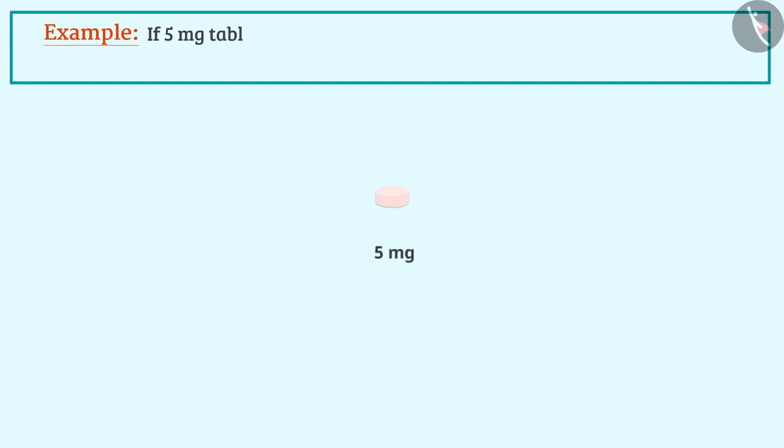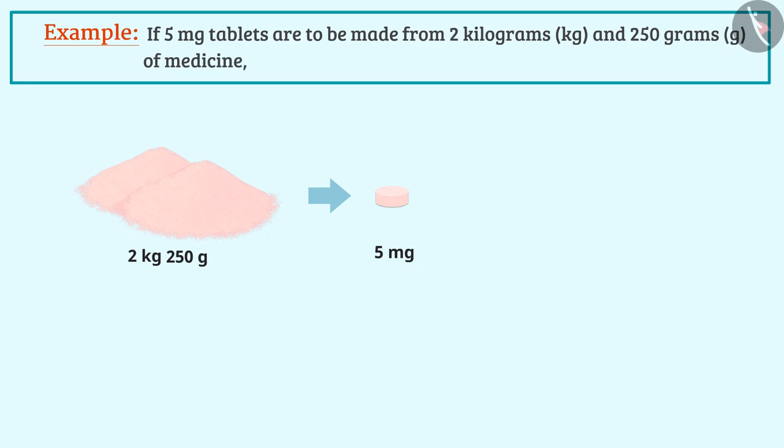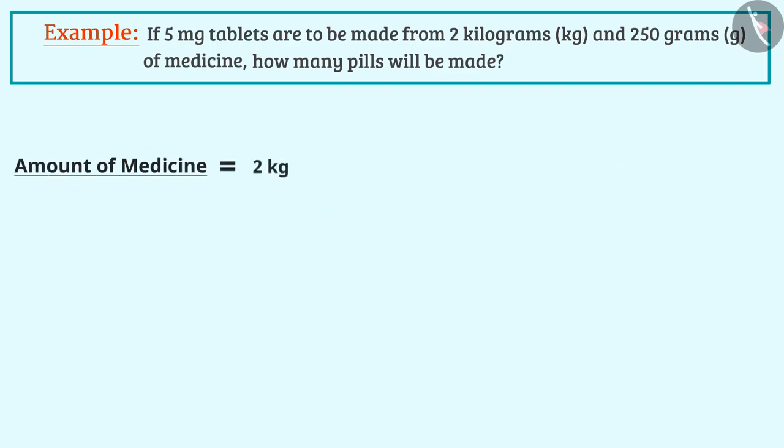If 5 mg tablets are to be made from 2 kg and 250 g of medicine, how many pills will be made? Here also, we have to make the units same. The amount of medicine is 2 kg and 250 g.